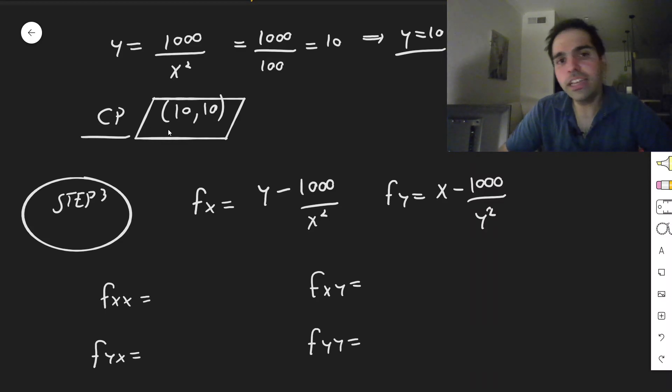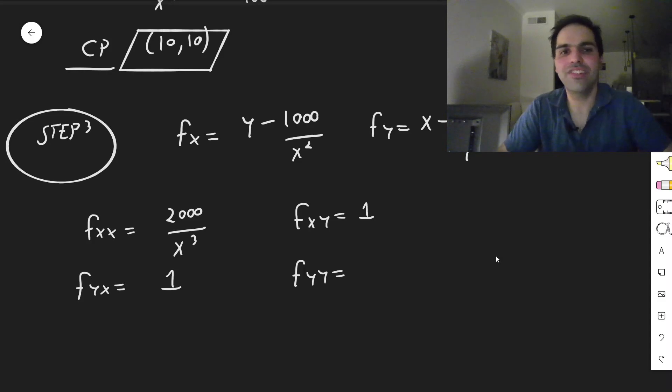Because remember, fx is y minus a thousand over x squared, fy is x minus a thousand over y squared. So we have four partial derivatives: fxx, fxy, fyx, and fyy. So let's calculate this. If you differentiate this with respect to x, you get 2,000 over x cubed. fxy, that's much easier, the derivative of this with respect to y is 1. fyx is the derivative of this with respect to x, which is also 1. And by the way, Clairaut moment, fxy equals fyx. So it's a good way of checking that your answer is correct. And here, similarly, we get that fyy is 2,000 over y cubed.